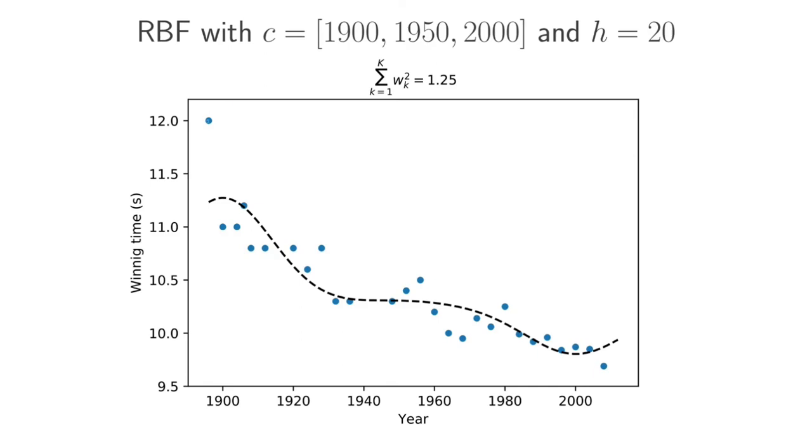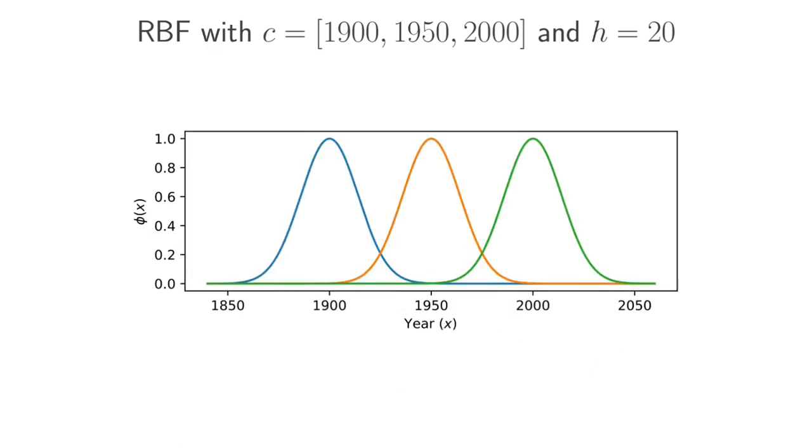And here we've got the actual Olympic winning times in these years, across the different years, and here's the prediction of our model. It looks okay. It's quite smooth, and we see some of the points are quite close to the prediction of the model. For that model, these are the radial basis functions that I used. So we use the family of RBFs, and with basically three bumps as specified by the parameters here.